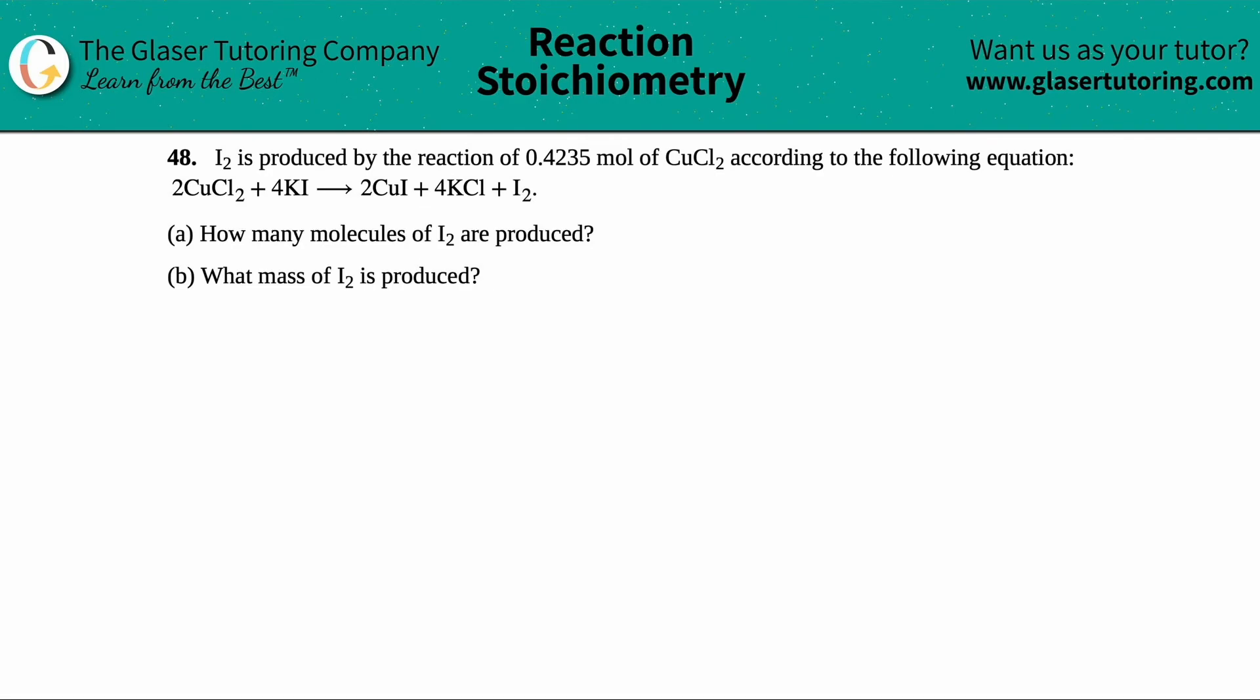Number 48. I₂ is produced by the reaction of 0.4235 moles of copper 2 chloride, which is CuCl₂, according to the following equation. And we have 2 CuCl₂ plus 4 KI yields 2 CuI plus 4 KCl plus I₂. And then we have letter A. How many molecules of I₂ are produced?